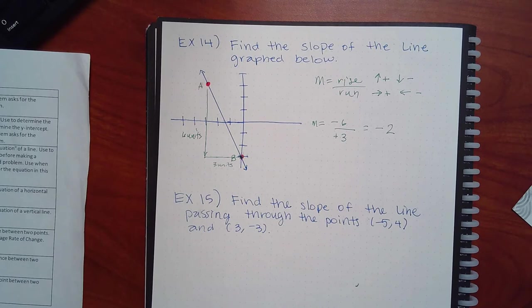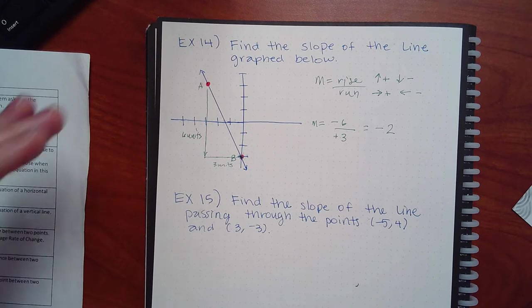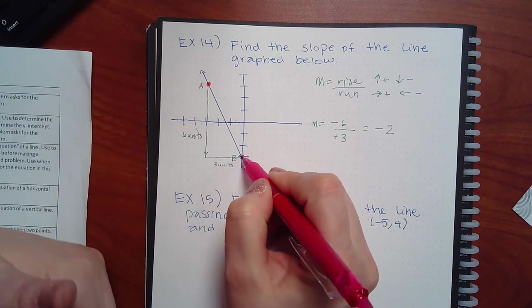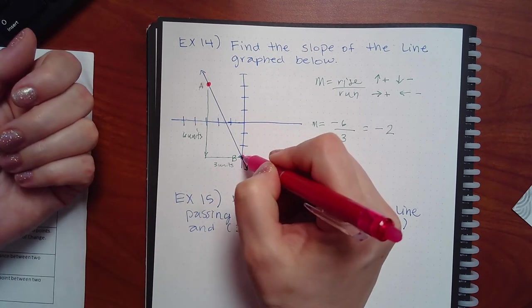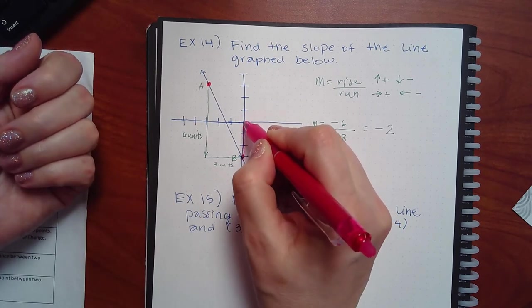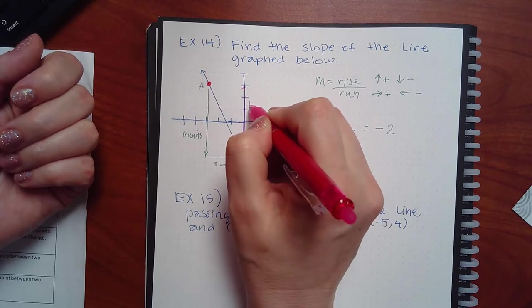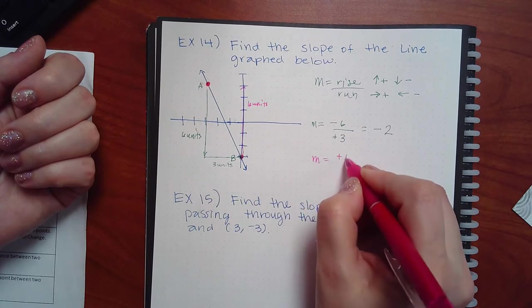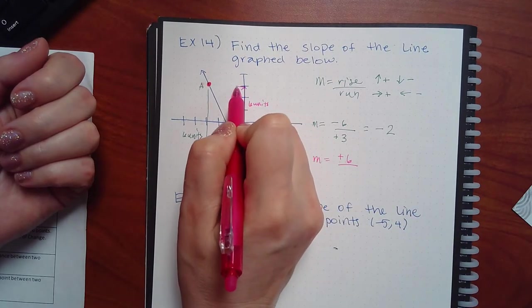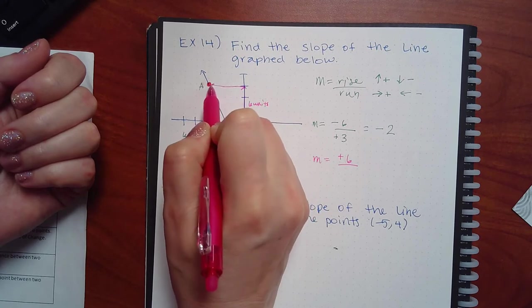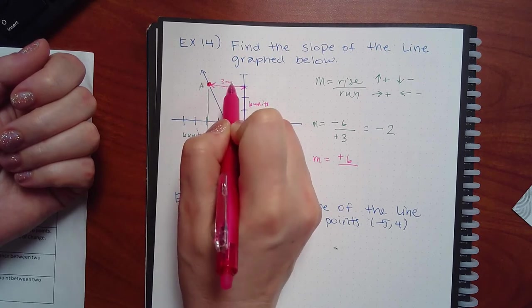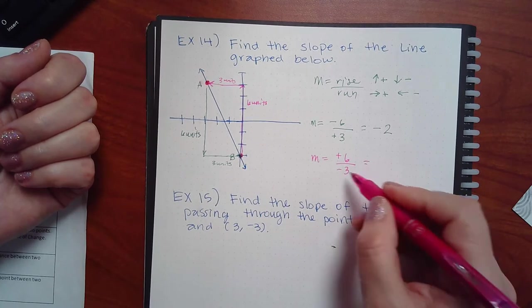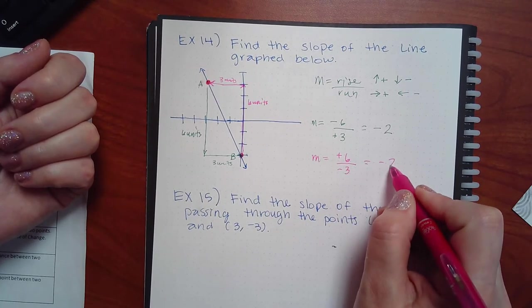Now going from B to A: I rise one, two, three, four, five, six units up — positive six. Then I go one, two, three units to the left — negative three. Positive six over negative three still reduces to negative two. It doesn't matter which direction you travel.